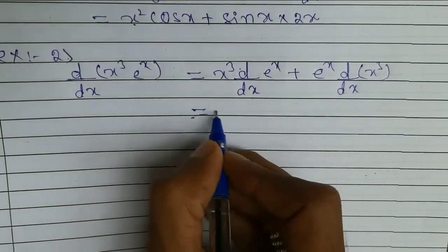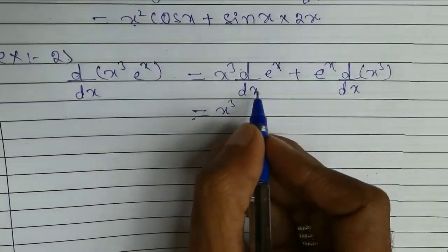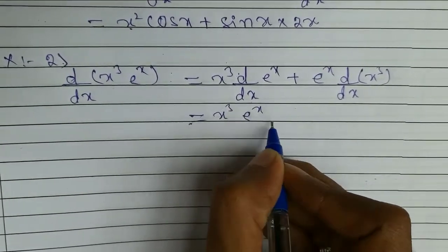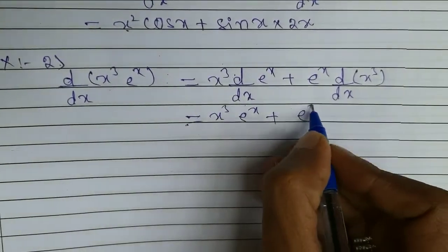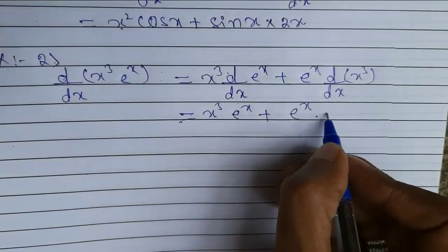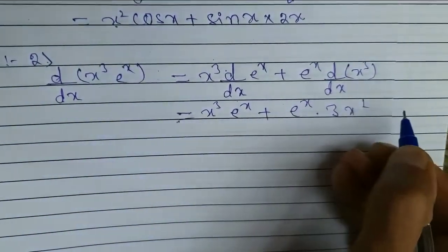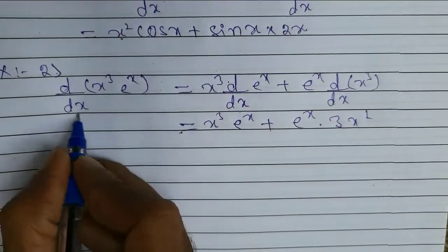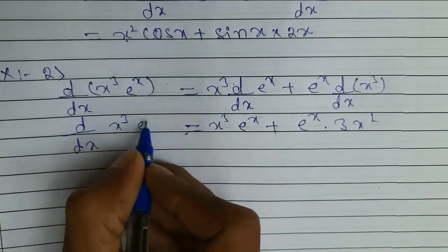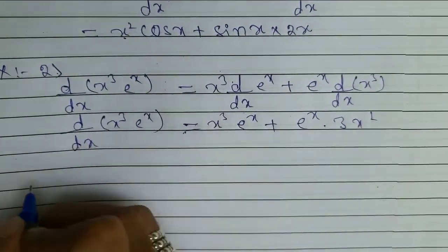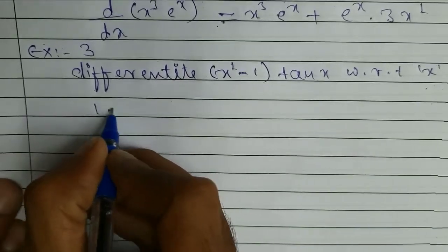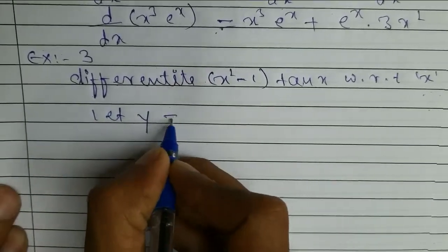So here x cube as it is — we know the differentiation of e to the power of x is e to the power of x only — plus e to the power of x into the differentiation of x cube, that is 3x square. So this gives us our answer.